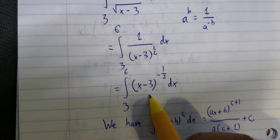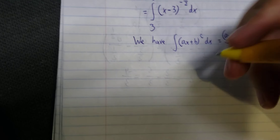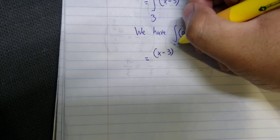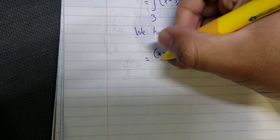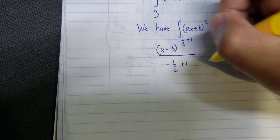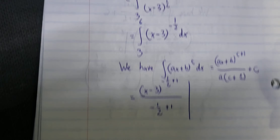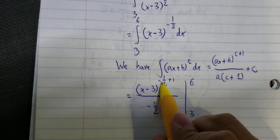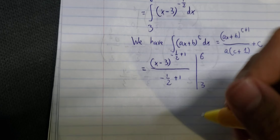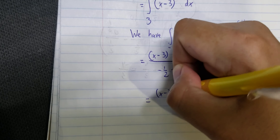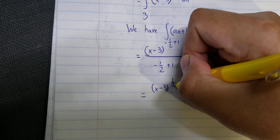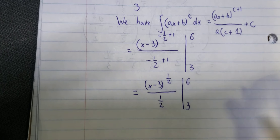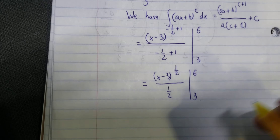So in this case we have it like this, and then we put the bounds from number three to number six. So negative one over two plus one, we have positive one over three. So we put number six and number three in here.